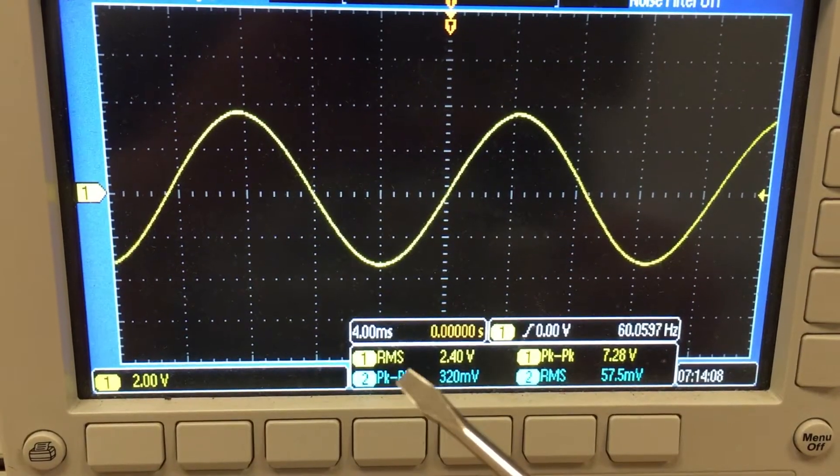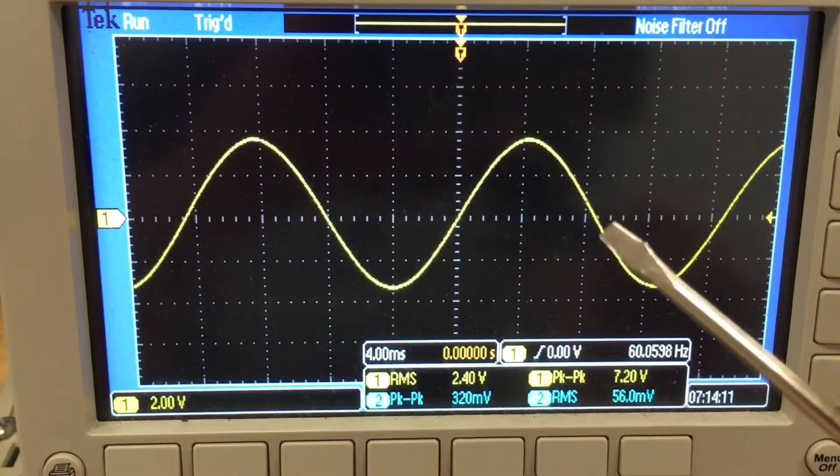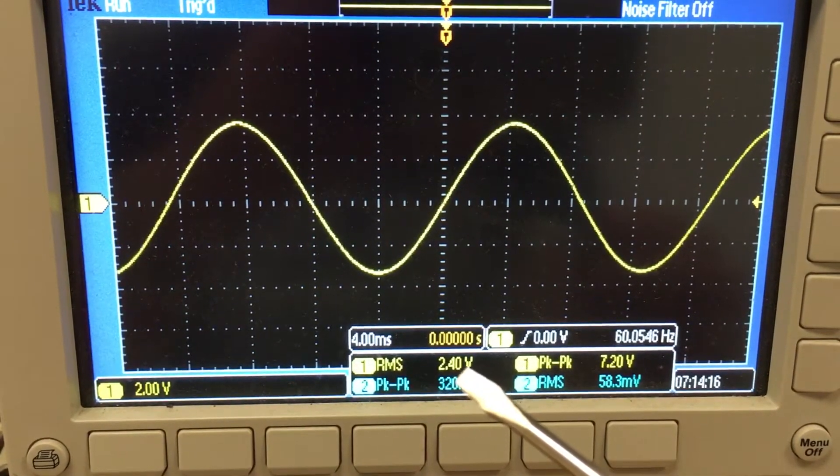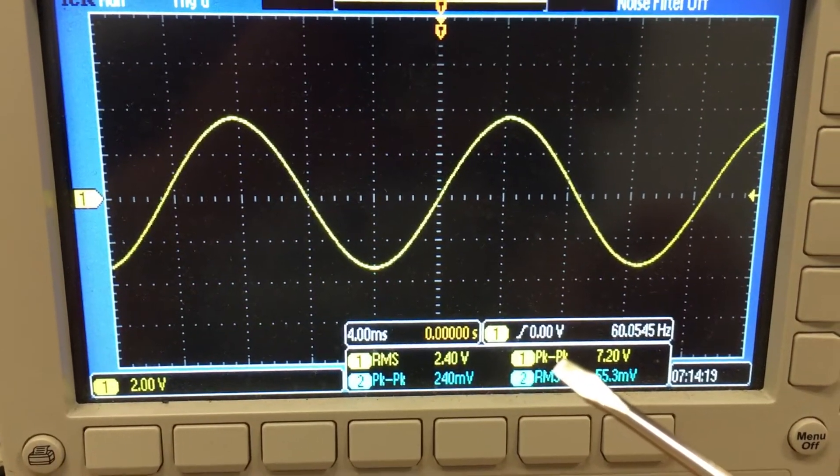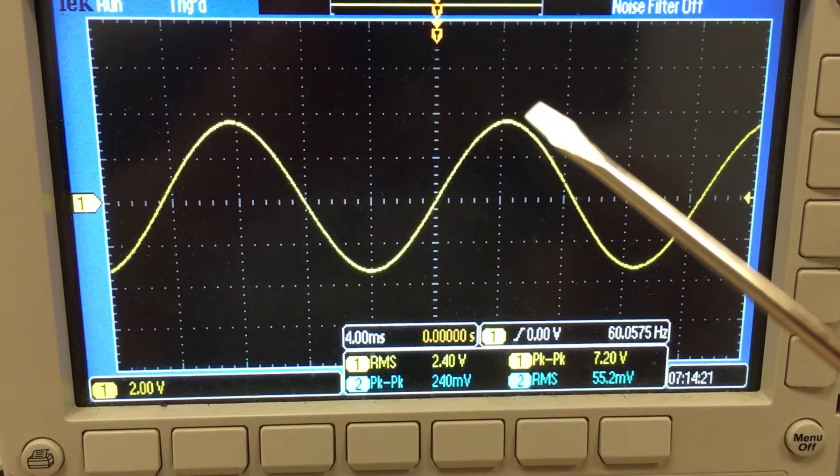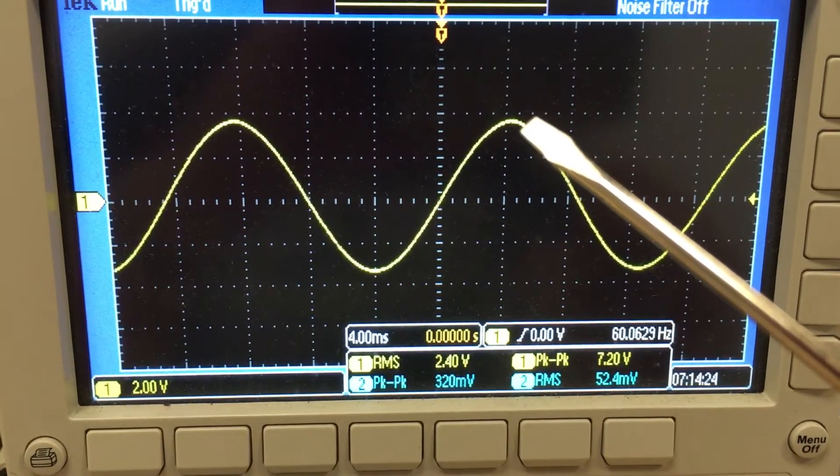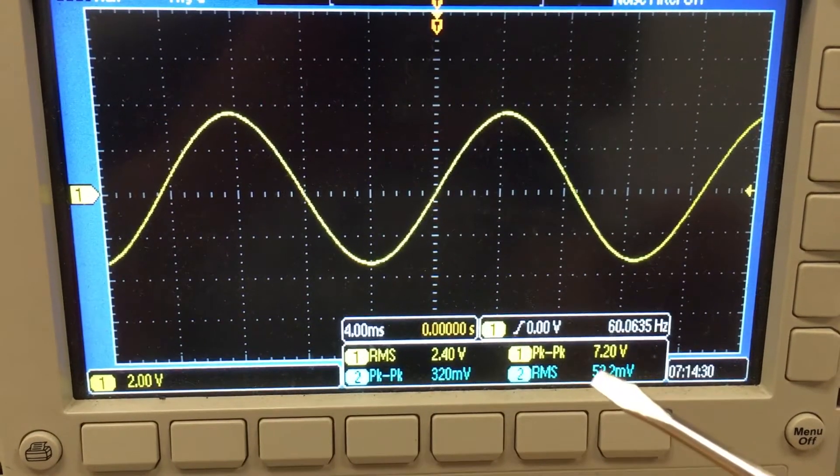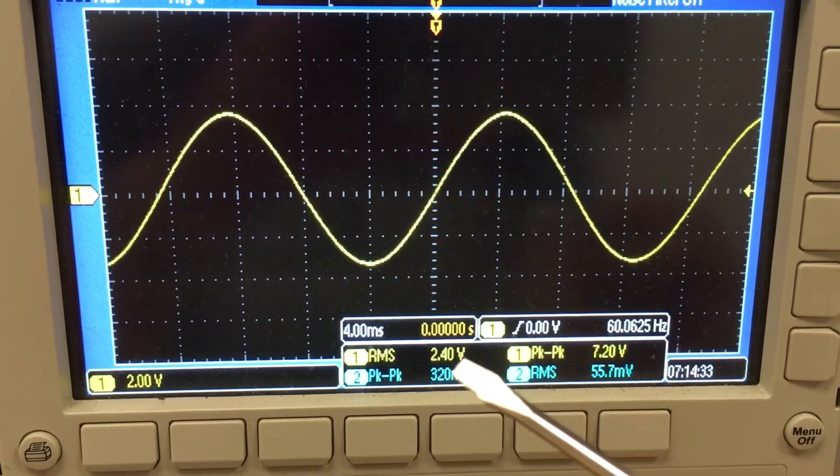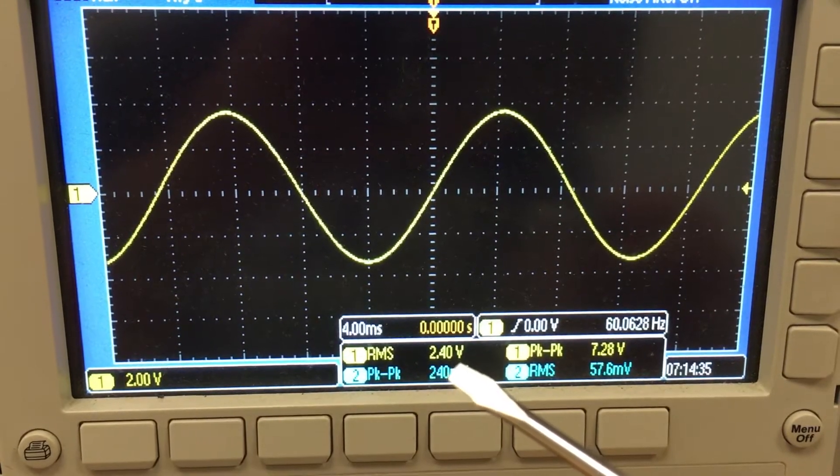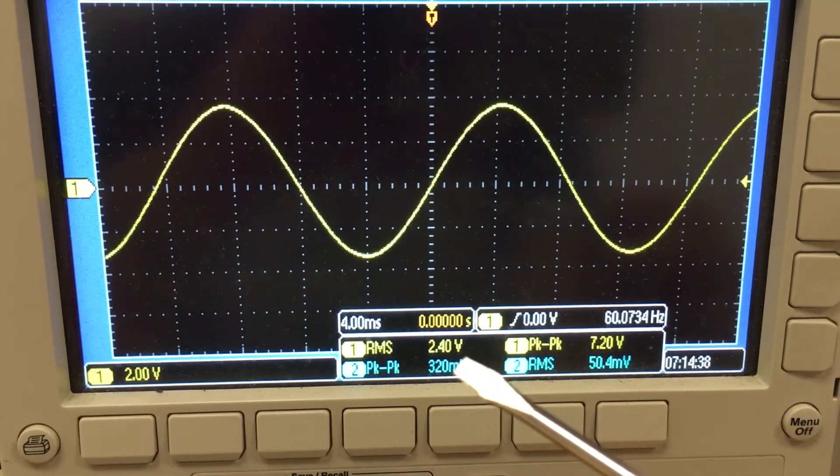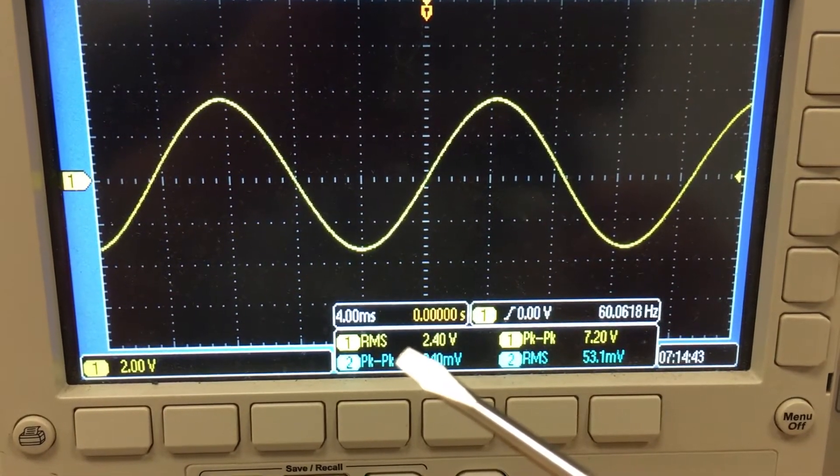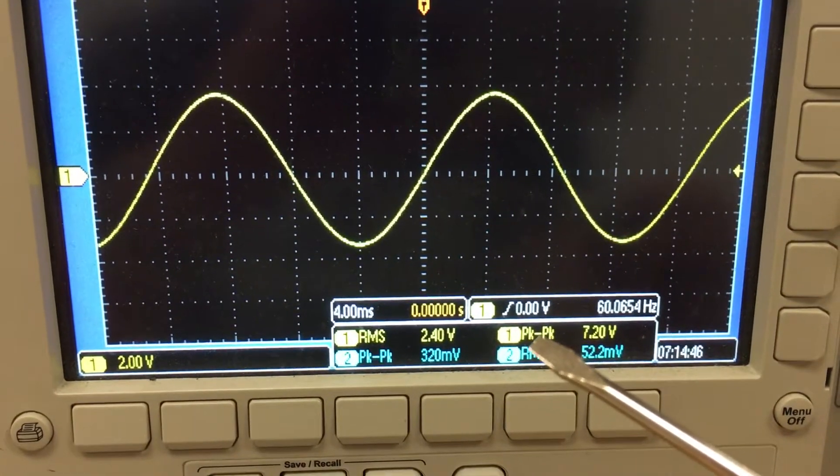Now the other measurements we've got here - just concentrate on the yellow for now, because that's the trace we've got displayed - we've got RMS, which is 2.4 volts, and peak to peak. That means we're looking at the whole height of the wave in voltage, and that's 7.2 volts. You see that those two numbers, though they describe the same wave, are very different, and that shows you just how profound the difference between the effective or RMS value of voltage in a circuit is compared to the whole height of the wave.